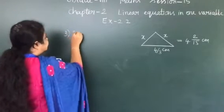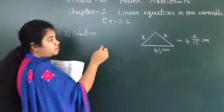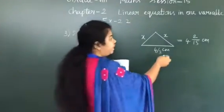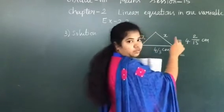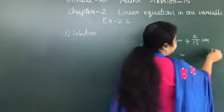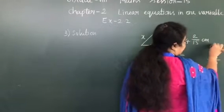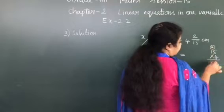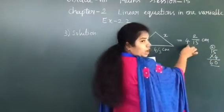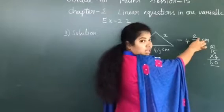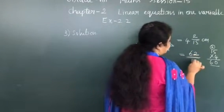Solution. First, let us convert 4 and 2/15 into an improper fraction — it is a mixed fraction. 15 into 4 is 60, and 60 plus 2 is 62. So 4 and 2/15 becomes 62/15 cm.